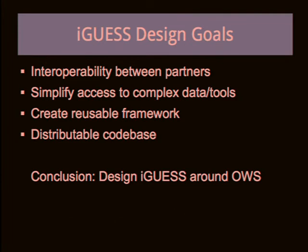We had a couple of primary design goals when we set out to work on iGuess. The first was interoperability between partners — we wanted partners to provide data about their cities and other partners to provide models, with data and models able to work together. We also wanted to simplify access to modeling tools, create a reusable framework, and make the code open source and distributable. Taking all these together, we decided iGuess should be designed around open web services.